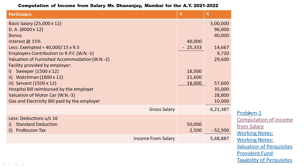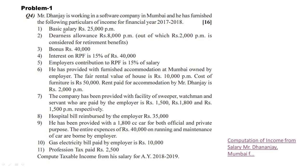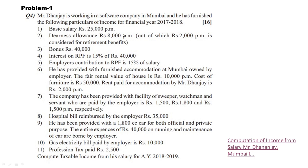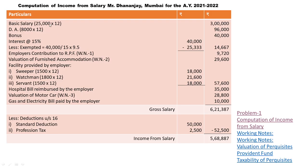Number one is basic salary. Basic salary is Rs. 25,000 per month. So basic salary = Rs. 25,000 × 12 = Rs. 3,00,000 in the outer column. Next, dearness allowance is Rs. 8,000 per month. Dearness allowance is a fully taxable allowance. Therefore, dearness allowance = Rs. 8,000 × 12 = Rs. 96,000 in the outer column.